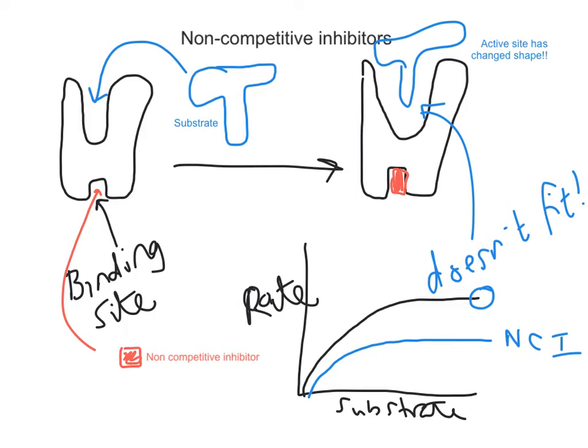This is a really quick and easy way, if you're given a graph in an exam, to tell whether the reaction has been affected by a competitive or a non-competitive inhibitor. The non-competitive inhibitor never reaches its maximum, whereas the competitive inhibitor will eventually be out-competed by the substrate and therefore will eventually reach its maximum.